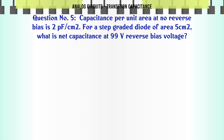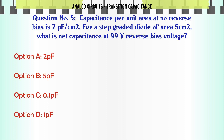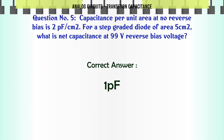Capacitance per unit area at no reverse bias is 2 PF/cm². For a step graded diode of area 5 cm², what is the net capacitance at 99V reverse bias voltage? A: 2 PF, B: 5 PF, C: 0.1 PF, D: 1 PF. The correct answer is 1 PF.